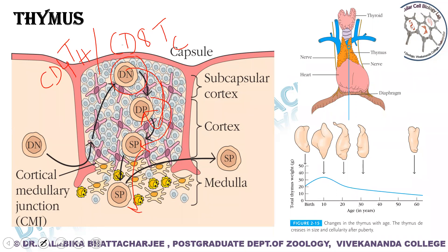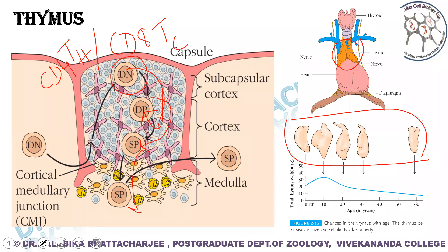This is the location of the thymus — just beneath the thyroid, above the heart. The thymus gradually decreases in size, cellularity, and functional capacity after puberty. This correlates with the gradual decline of our immune system with age.